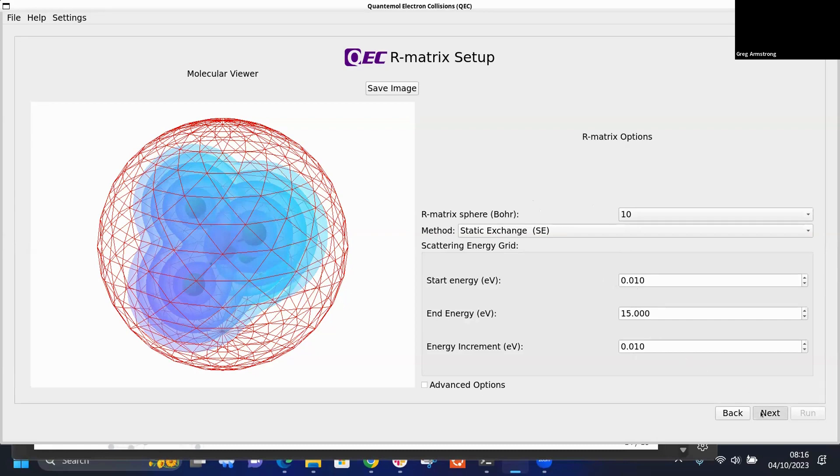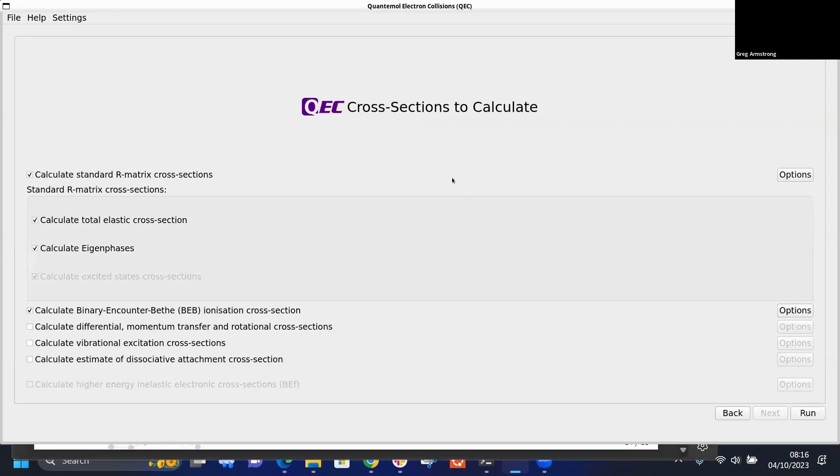This screen allows you to select what cross sections you want to calculate. There are the set of standard R-matrix calculations which involve elastic scattering cross section, the eigenphases. You can calculate excited states if you wish with a close-coupling calculation which is somewhat more time consuming. You can also calculate ionization, differential momentum, rotational and vibrational excitation calculations, and dissociative attachment. For the sake of time I'm going to leave it with just ionization and the total cross section.